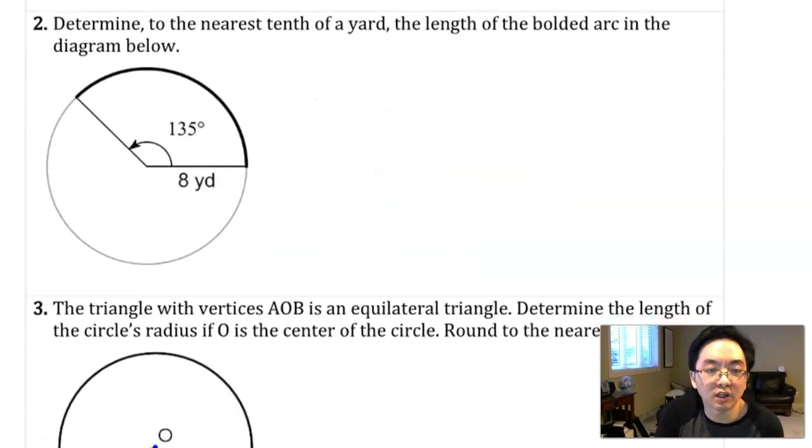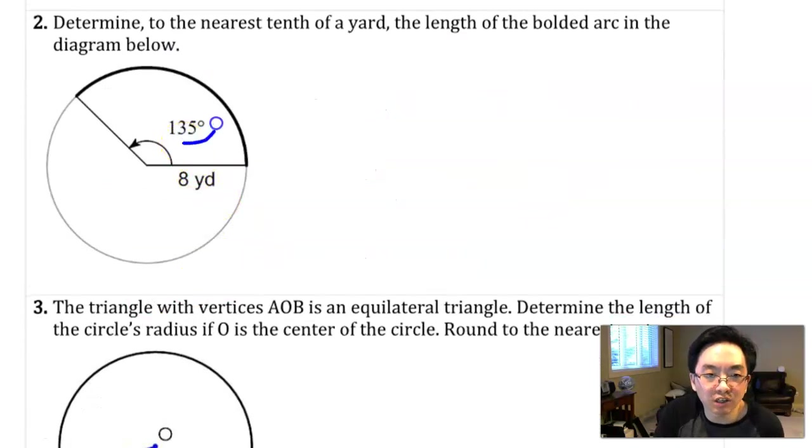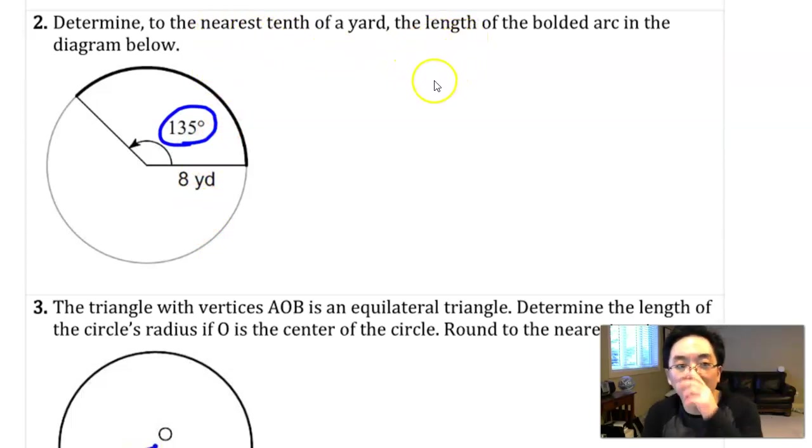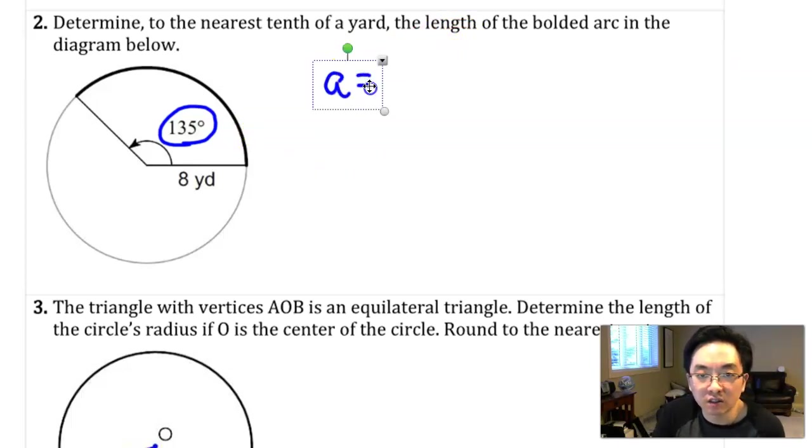Let's take a look at example number two. Example number two gives you the central angle in terms of degrees. They want us to determine to the nearest tenth of a yard the length of the bolded arc in the diagram below. The arc is given by r times theta. This is a manipulated version of theta equals a over r.